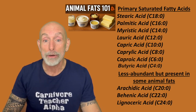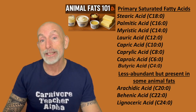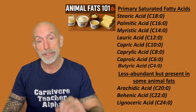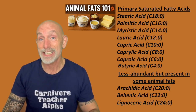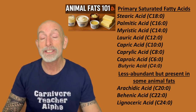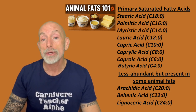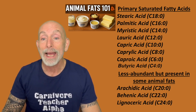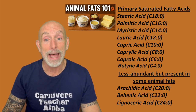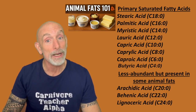Capric acid, which you sometimes see on MCT oil as C10, is also a medium-chain fat found in dairy, goat milk, and lamb fat. It provides rapid fuel and supports mitochondrial function.